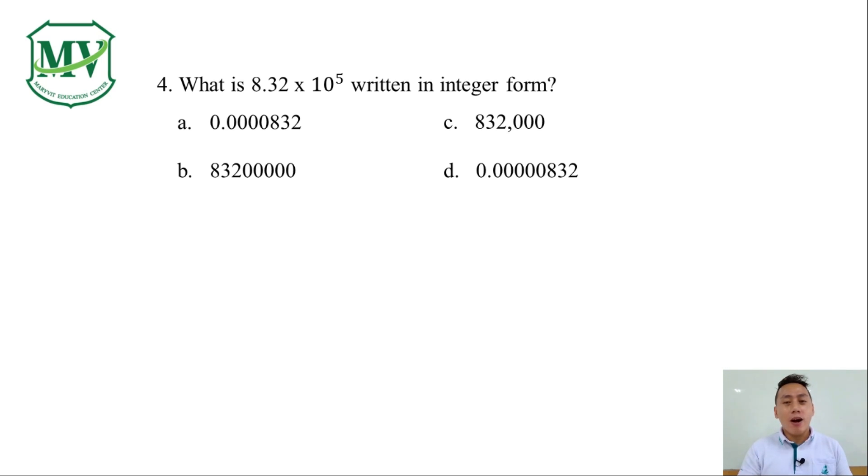Take note that our exponent is positive. That means that our answer must be a number greater than 1. Choices A and D are numbers less than 1. So they're out of our possible answer. That narrowed down our choices to C and B.